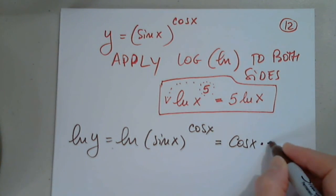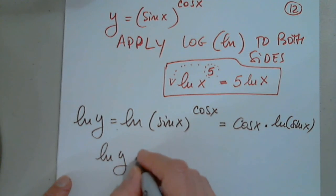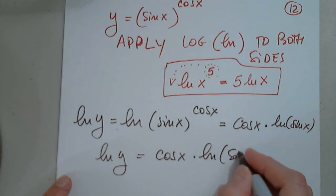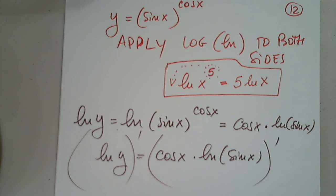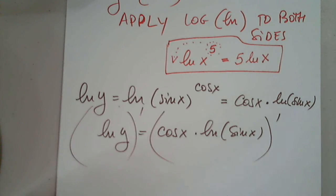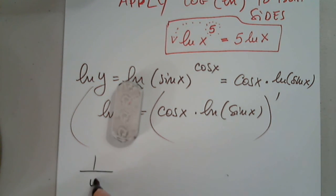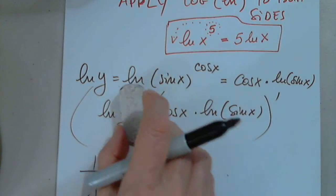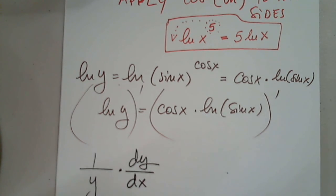Applying the log power rule: natural log y equals cosine x times natural log of sine x. Now I differentiate both sides. The left side, since log is applied to a function y, gives 1 over y times dy over dx.